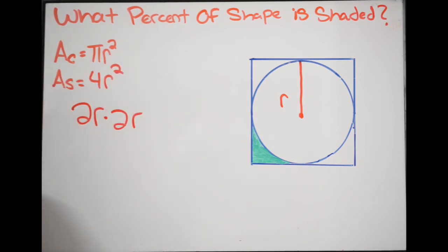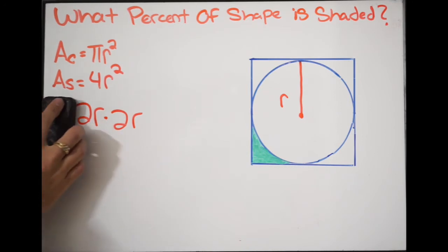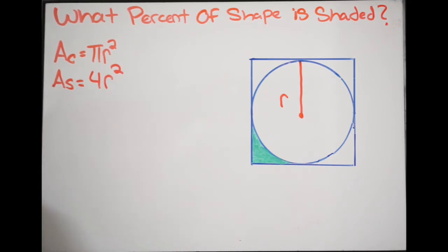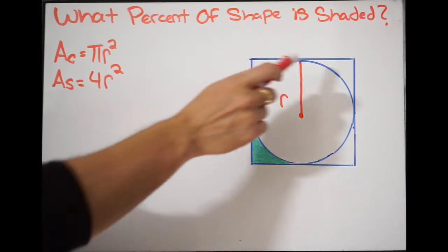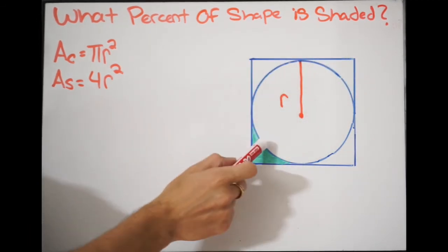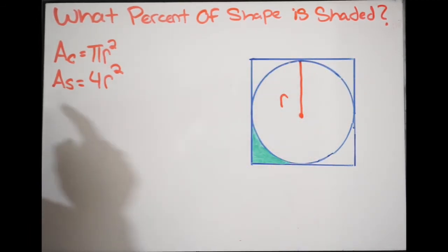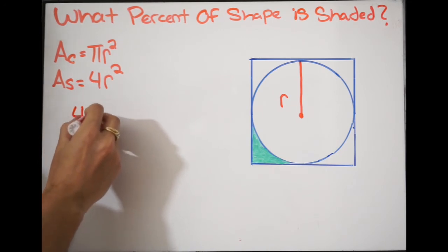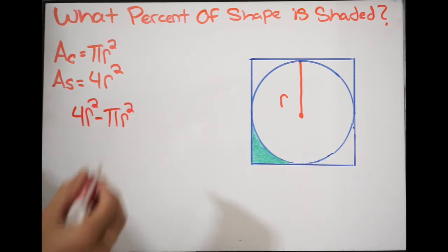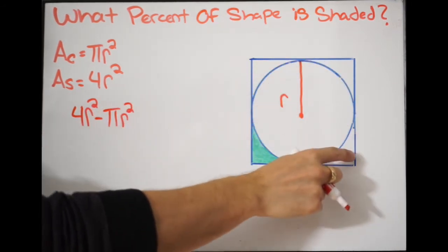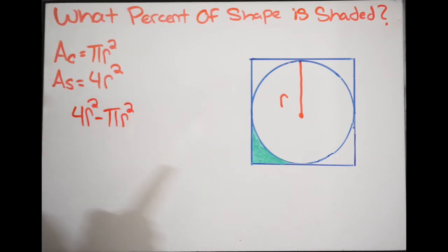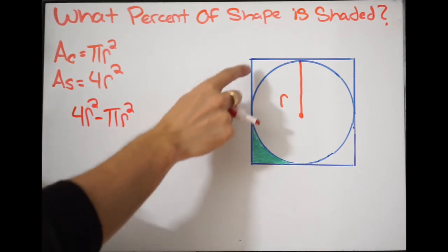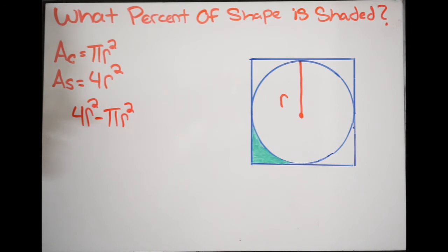So now I have the area of the square and the area of the circle. At this point, what we want to do is we want to find these 4 small regions right here. So in order to do that, I'm going to do the area of the square minus the area of the circle. So for example, I'm going to do 4R squared minus pi R squared. Now remember, this is going to give me all 4 regions here, and I only want 1.